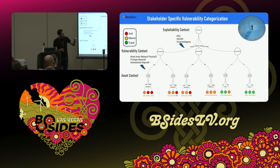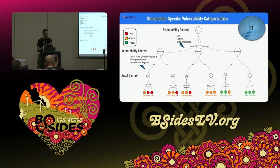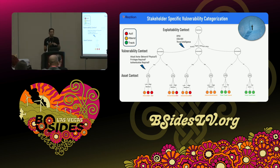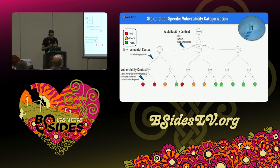Then there's the asset context layer: how critical is this asset — low, medium, or high? From there you make a decision. If a vulnerability is actively exploited, automatable, and on a critical asset, you obviously need to act upon it. The point isn't to debate the specific decisions — it's that you have a framework to communicate to stakeholders: 'this is how we do things, based on these parameters.' And you can tune it to your organization's capacity.